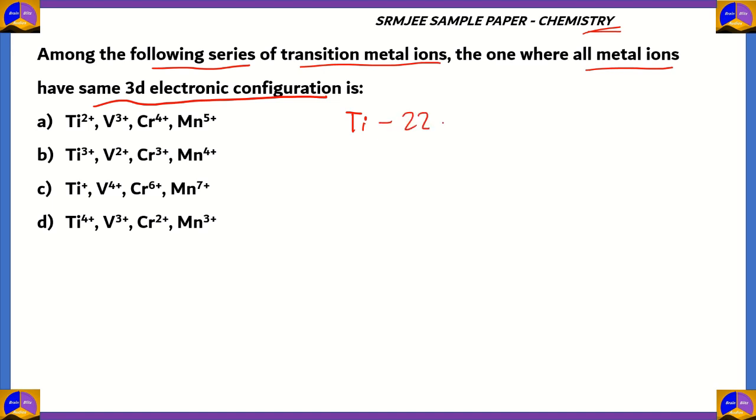Titanium has 22 electrons, a total of 22 electrons. So its configuration is argon, which is the nearest noble gas. Then in the outer shell you'll have 4s² and then 3d². If you look at vanadium, it has atomic number 23. So therefore you'll get argon, and then you have 4s², then 3d³.